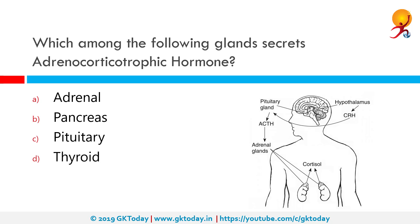Which among the following glands secretes adrenocorticotropic hormones? The correct answer is the pituitary gland. The pituitary gland or hypophysis is located in one of the bones at the base of the skull. It has two portions: the anterior hypophysis and the posterior hypophysis. The anterior part produces two hormones that work directly — growth hormone and prolactin — and four tropic hormones: the adrenocorticotropic hormone or ACTH, the thyroid stimulating hormone or TSH, the luteinizing hormone or LH, and follicle stimulating hormone or FSH.